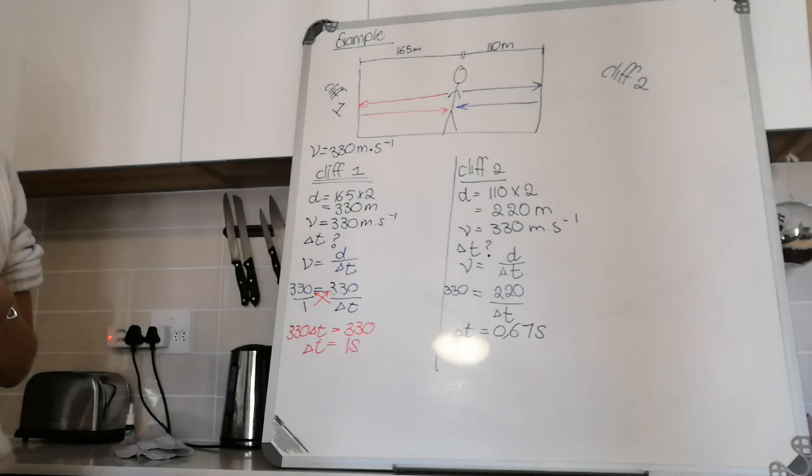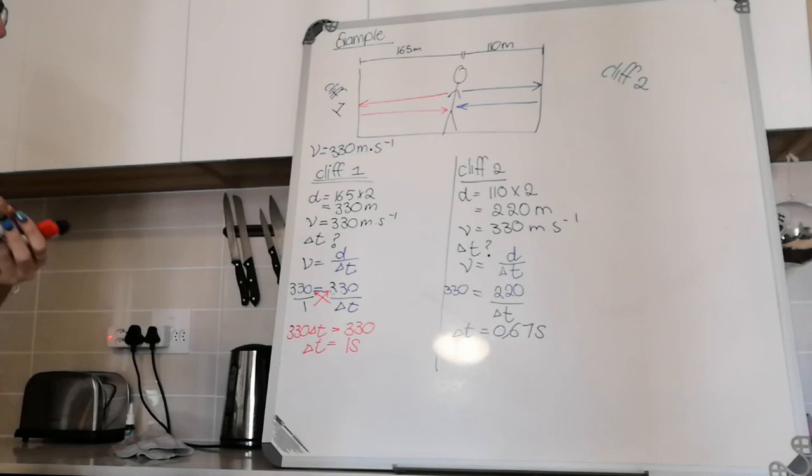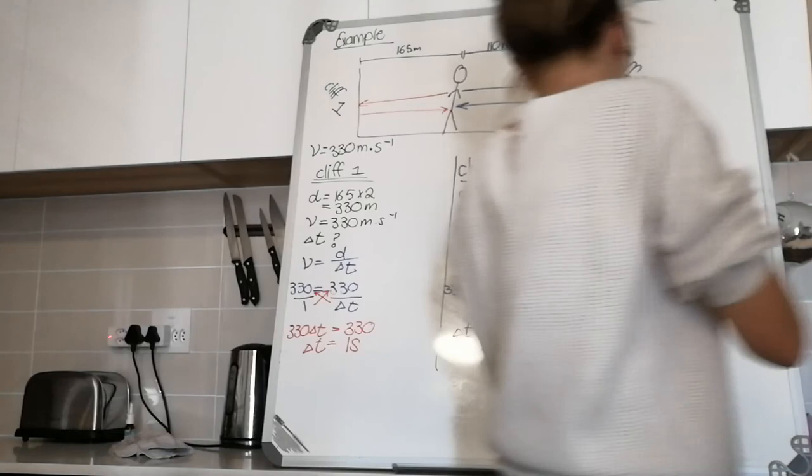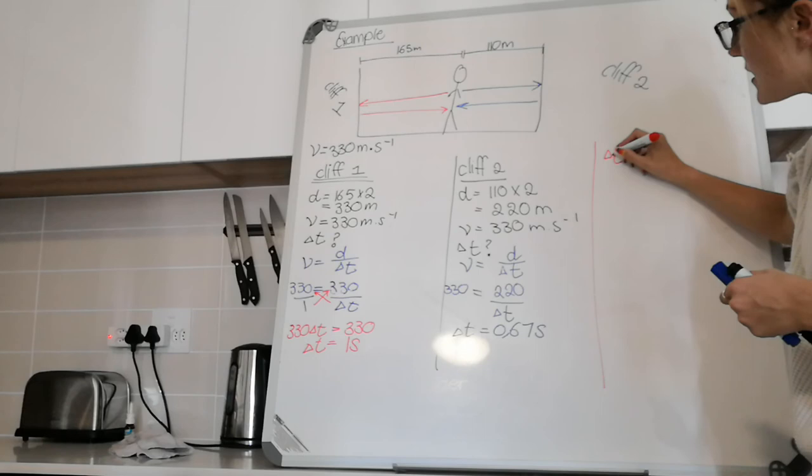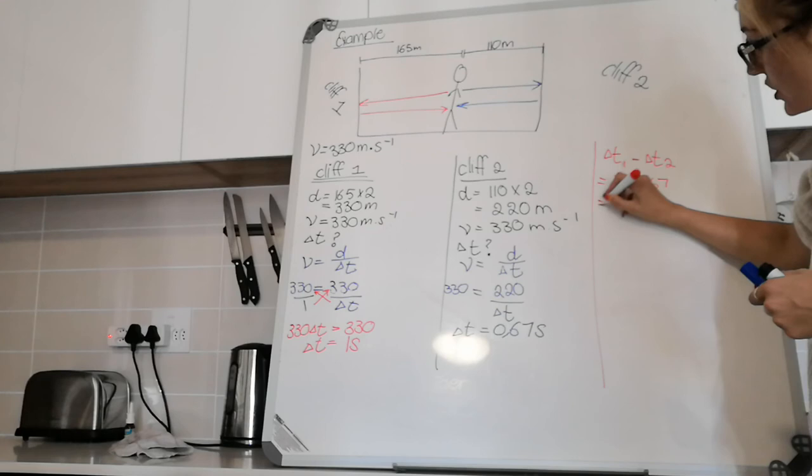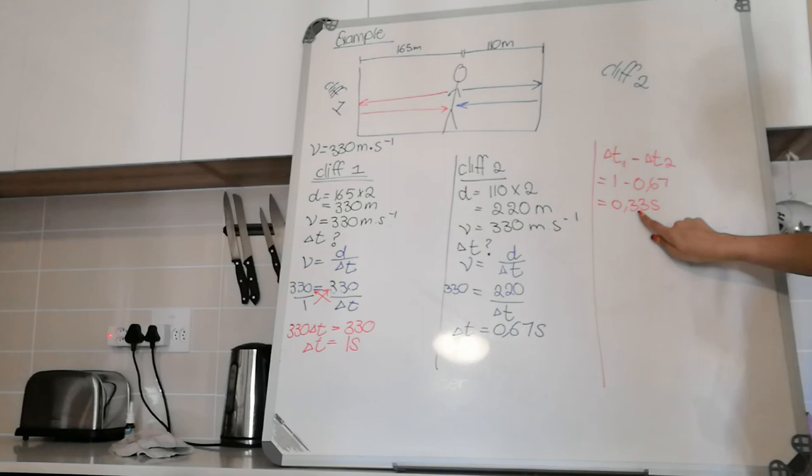Now we double check the question. They didn't ask how long it would take; they said what will be the time interval between the two echoes. To find the time interval, they're basically saying if I hear one echo, it'll be this one first—how long until I hear that echo? It's actually not so hard. We just want to find the difference in time between the two echoes. So we're going to do delta t for cliff one minus delta t for cliff two, which is one minus zero point six seven, which is zero point three three seconds. So we will have to wait zero point three three seconds between the two echoes.